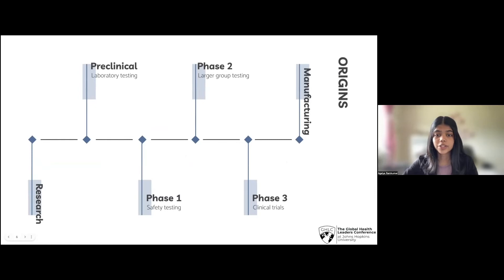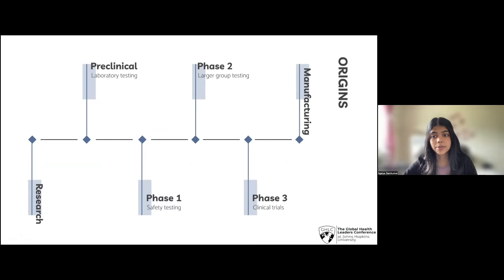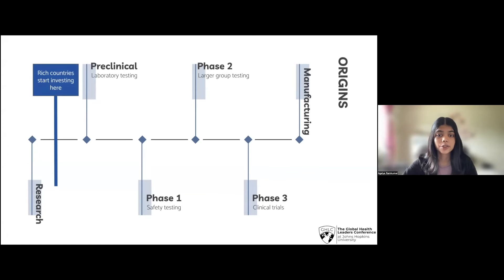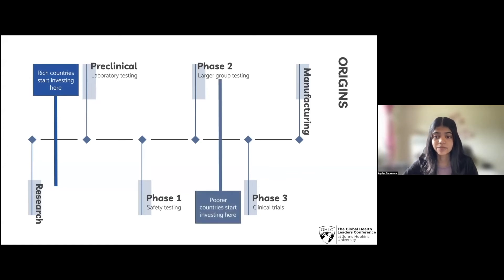So how did it end up this way, with rich countries holding most of the vaccines? We need to go back to the vaccine manufacturing and distribution process. When the vaccine was in the making, several rich countries invested millions in the research and development phase. In return, drug companies promised these countries a number of vaccines early on — this is known as a bilateral deal, and this is what gave rich countries a head start. Less economically advanced countries can't afford to make these kinds of risky investments, so they usually start making their investments during the testing phase. Even though poorer countries have a greater need due to population density and poor health infrastructure, they usually end up at the back of the line for vaccines. At some points, rich countries had enough vaccines to cover their population six times over, whereas poor countries hardly had enough for half their population.